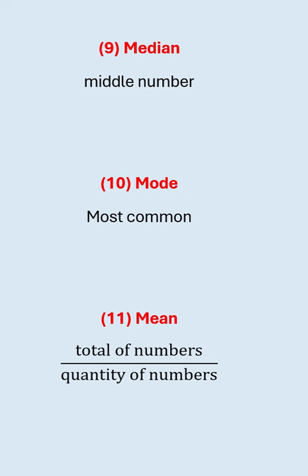In statistics, median is the middle number, mode is the most common number, and mean is when you add up all the numbers and divide by the quantity of numbers.